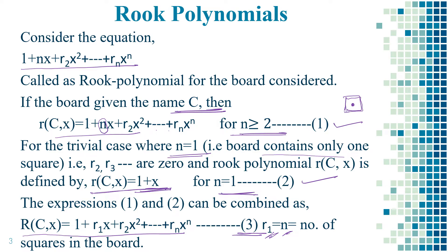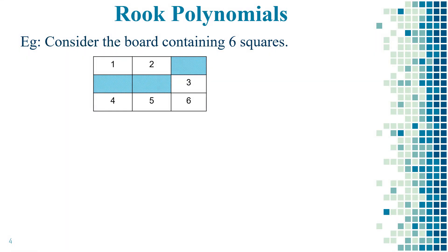Let's understand this concept thoroughly by considering a simple example: a board containing 6 squares, numbered 1 to 6. Since the board contains 6 squares, n = r1 = 6.